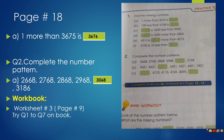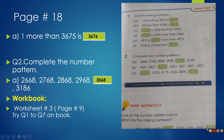Now go to page 18 and start practice. Question 1: fill in the missing numbers. Part A is '1 more than 3675'. One more than means we add 1 to the digit in the ones column, which is 5. So 5 plus 1 equals 6, and the number becomes 3676. Now try to attempt the rest of the parts by yourself.